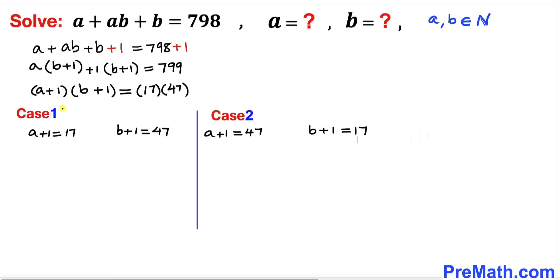Now let's consider case one first. Let's subtract one from both sides on this equation, so our a value turns out to be 16. And now let's subtract one from this equation; our b value turns out to be 46. So in case one, our solution turns out to be a equals 16 and b equals 46.